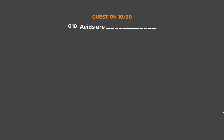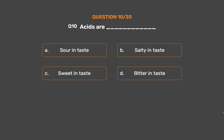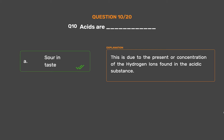Question number 10. Acids are — Option A: Sour in taste. Option B: Salty in taste. Option C: Sweet in taste. Option D: Bitter in taste. The correct answer is Option A: Sour in taste. This is due to the presence or concentration of the hydrogen ions found in the acidic substance.